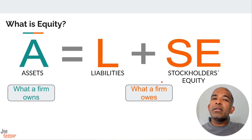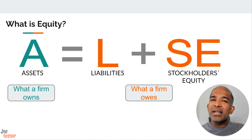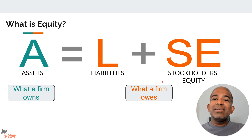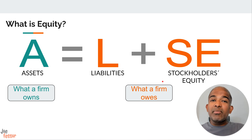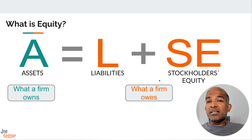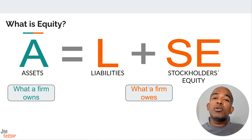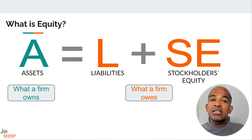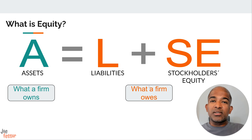Equity grows primarily in two ways. First, when the owners or shareholders invest more money into the business, or when the company is profitable and retains those profits instead of distributing them as dividends. Remember retained earnings from a few slides back? Yes, that's part of equity. So the more profitable a company is and the more of its profits it keeps, the higher its equity will be — reflecting the fact that those profits ultimately belong to the owners.